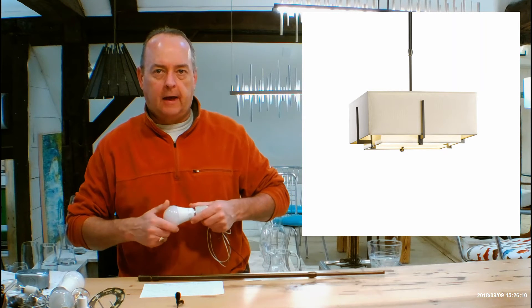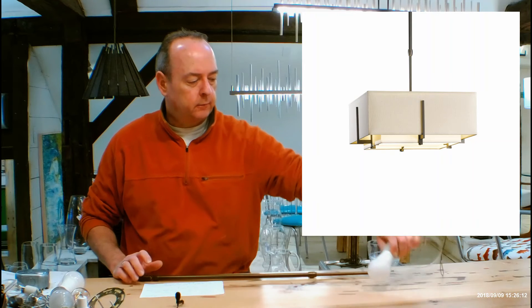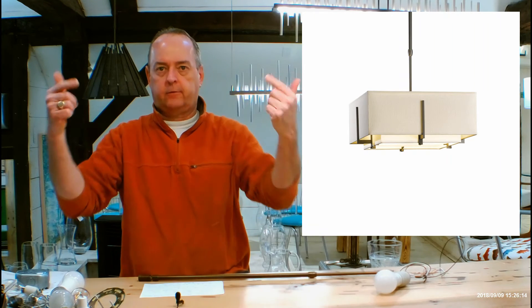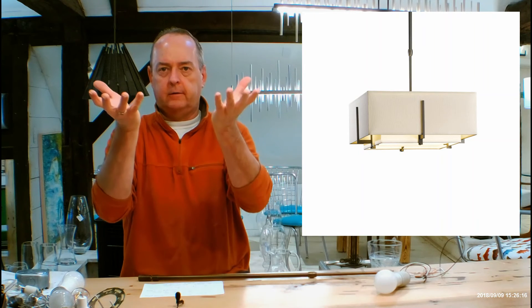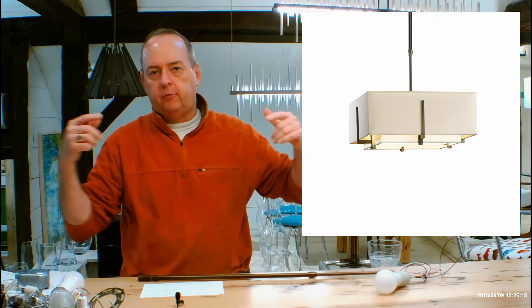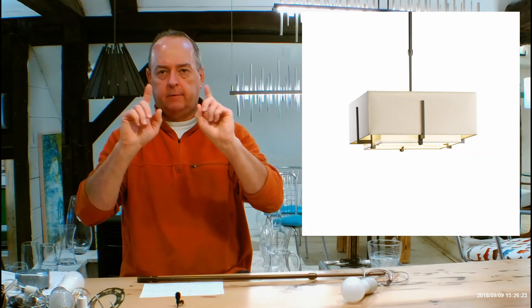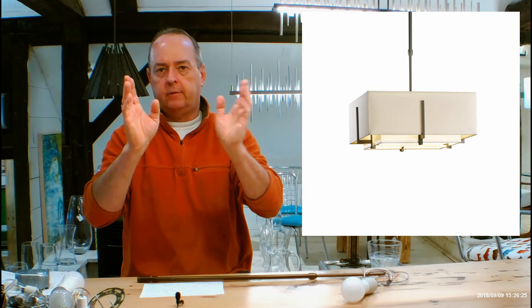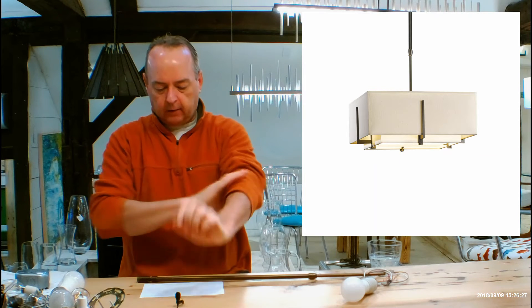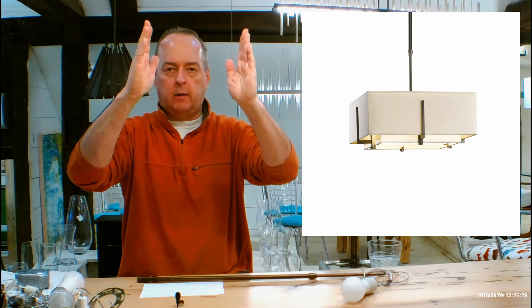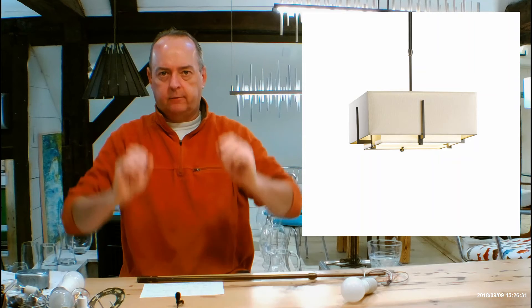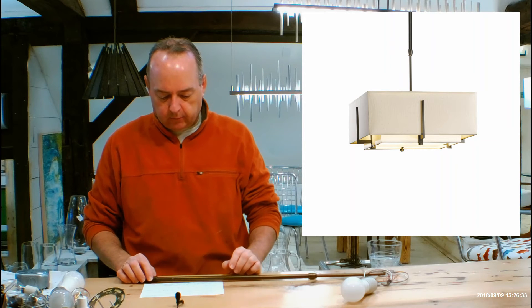On the bottom of this is going to be a flat frosted diffuser. That's a square piece of glass that fits into this. What that does is it keeps you from looking up and seeing these sockets. You'll notice there's a little tiny bit of a gap between the edge of the glass and the shade itself. That gap is to allow air to come in and cool sockets in case you're using incandescent bulbs.